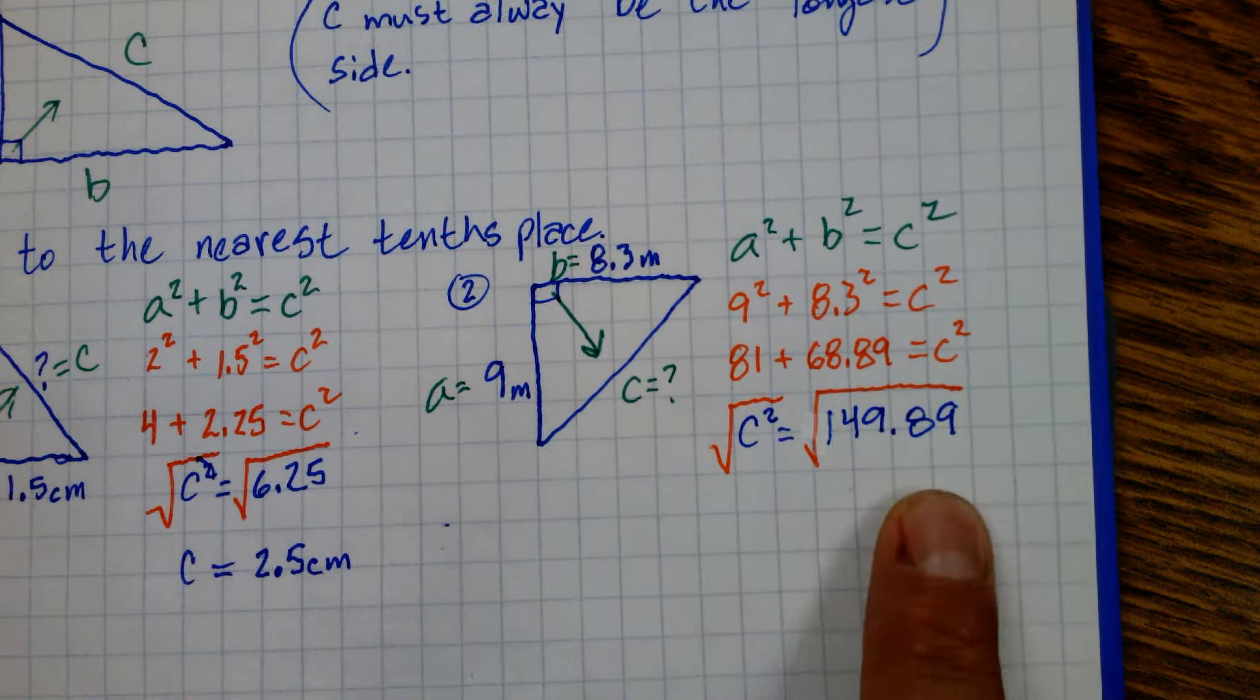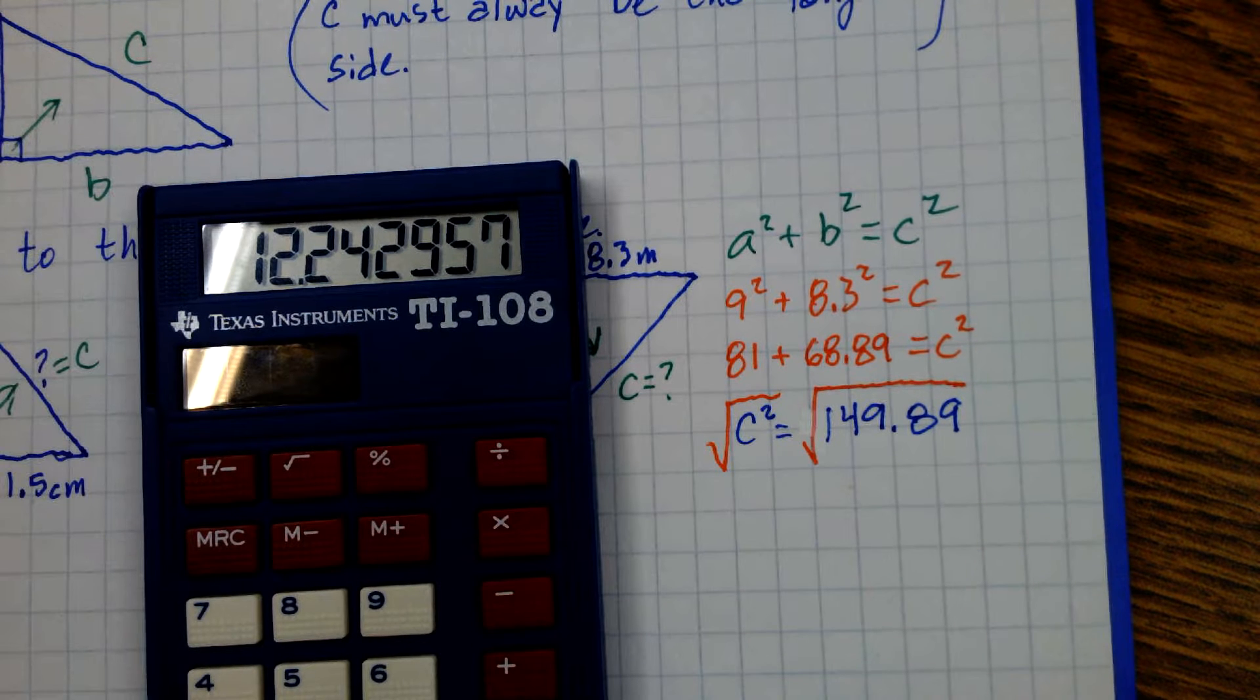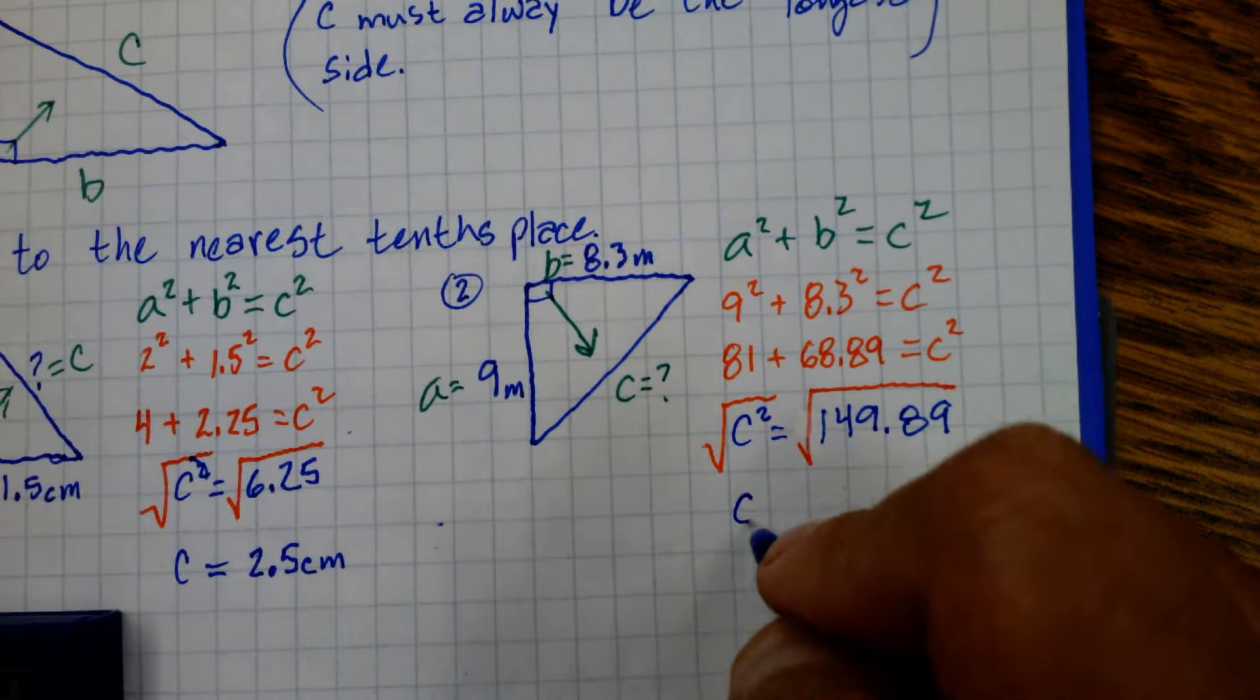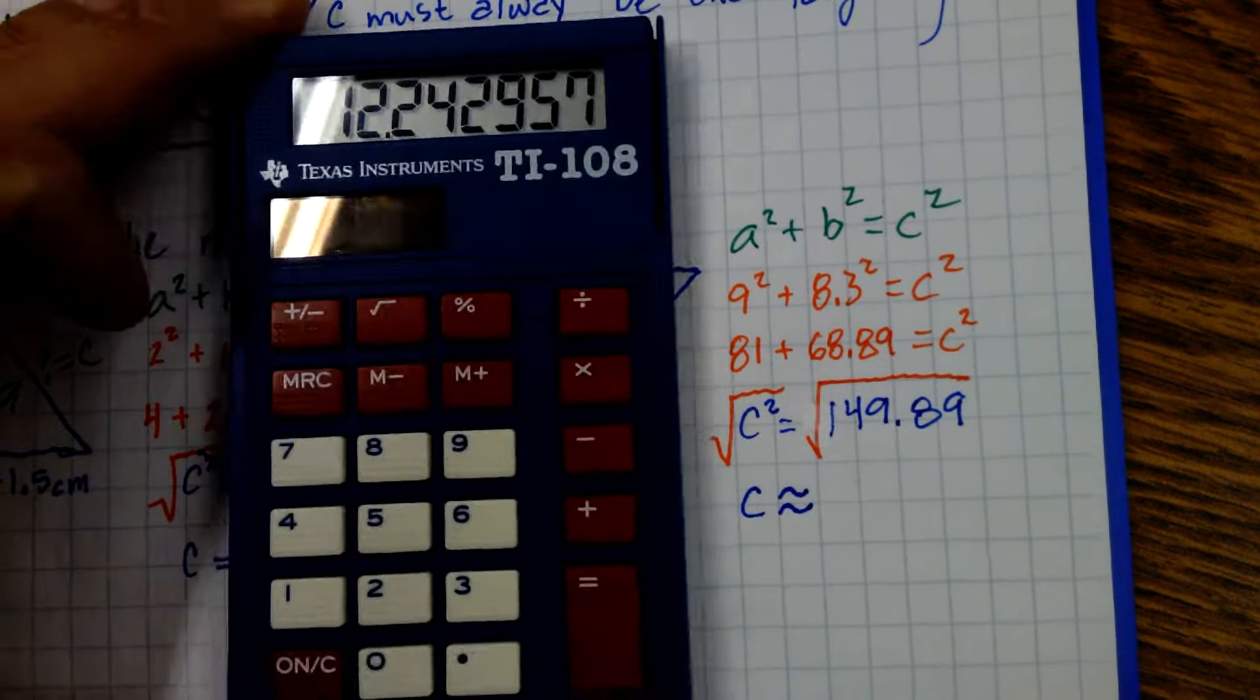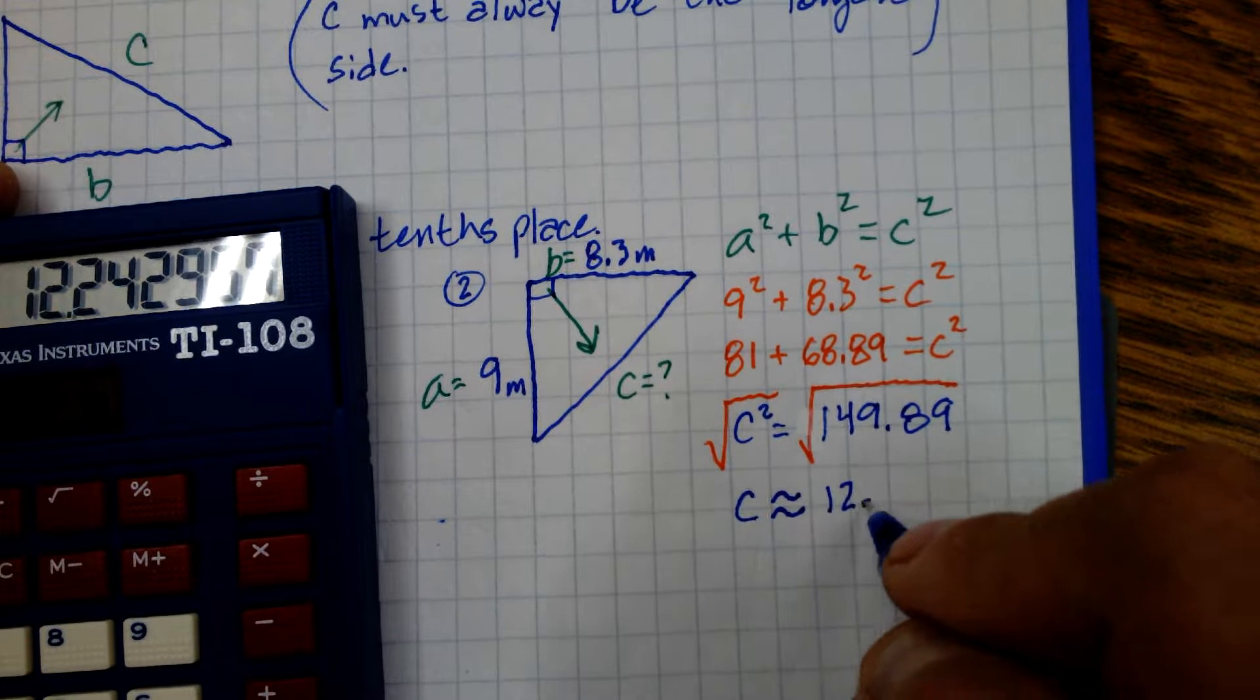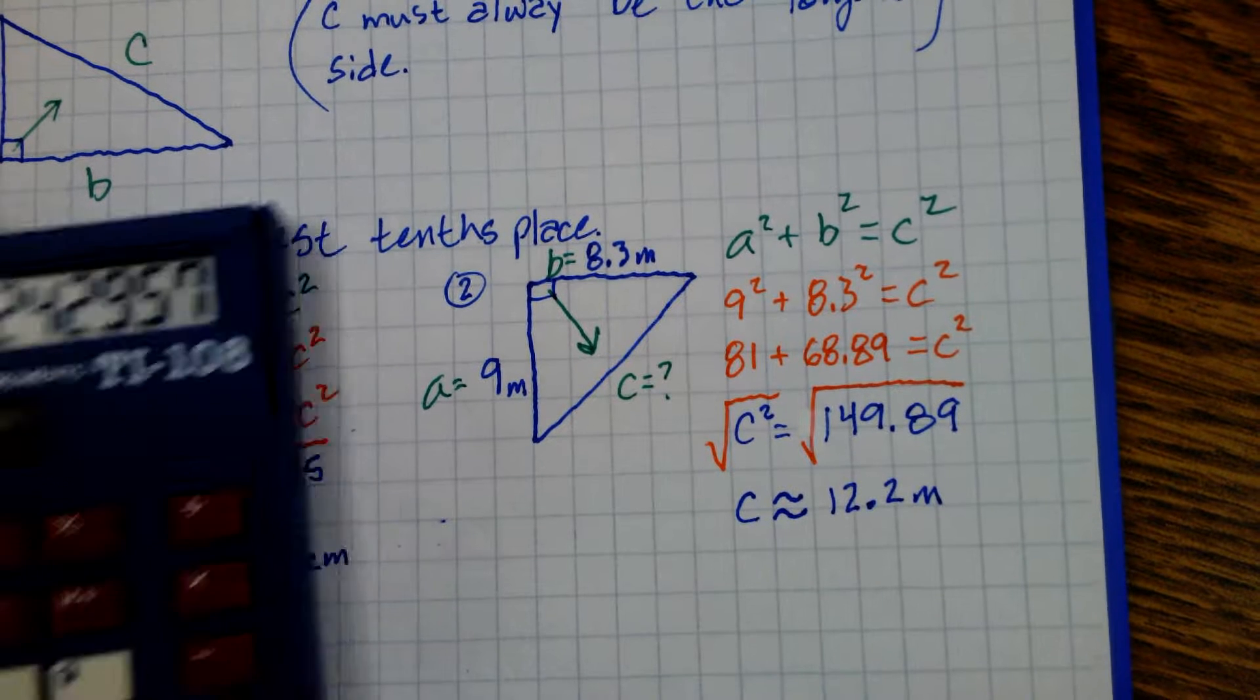So we want the square root of 149.89 and that's 12.24 blah blah blah and we'll just make that 12.2. So C is approximately, this time you do need the squiggly ones because it's an irrational number, 12.2 meters.